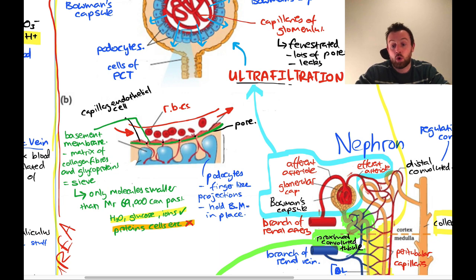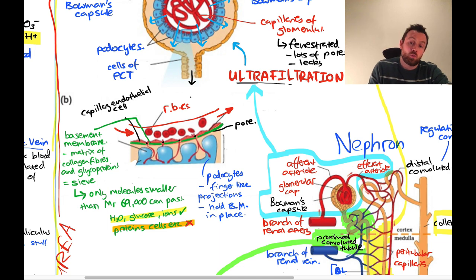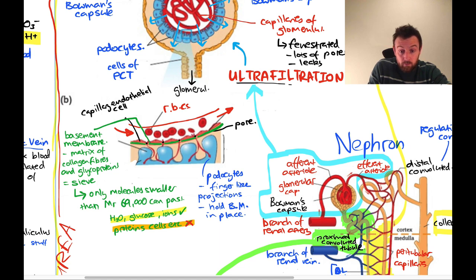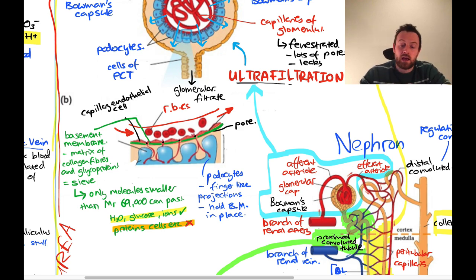This process produces something called glomerular filtrate, which moves down the proximal convoluted tubule where the next stage occurs. The glomerular filtrate is essentially the same as blood plasma, except it doesn't have proteins and it doesn't have cells — that is the only major difference.